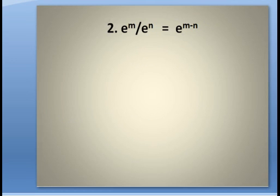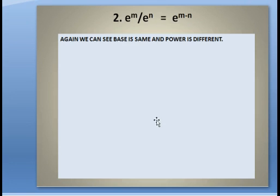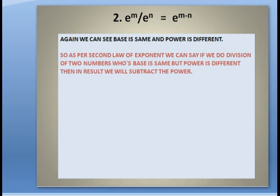Let's come to the second property: e to the power m divided by e to the power n is equal to e to the power m minus n. Again, the base is same and the power is different — base is e, powers are m and n. As per the second law of exponents, if we divide two numbers whose base is the same but power is different, we subtract the powers. The result is e to the power m minus n.